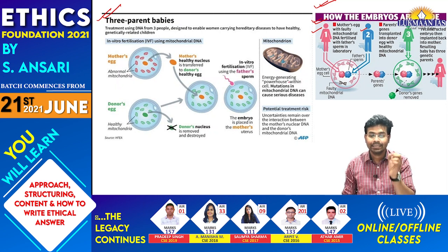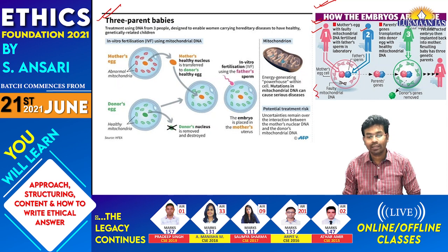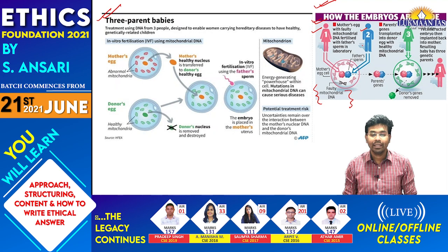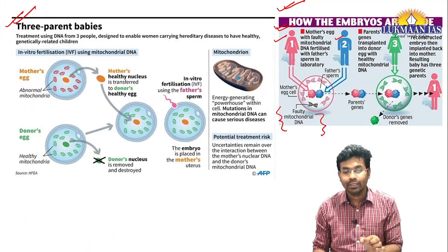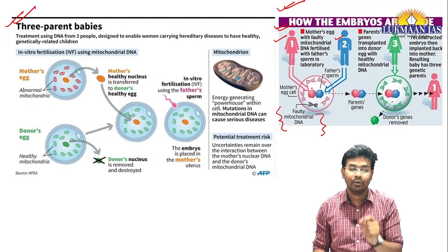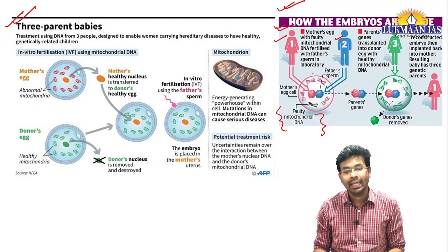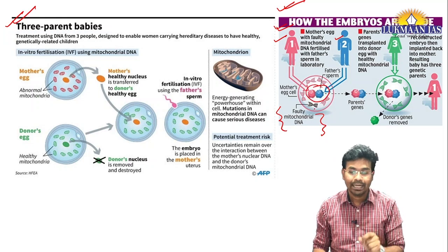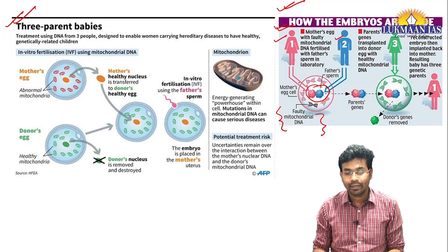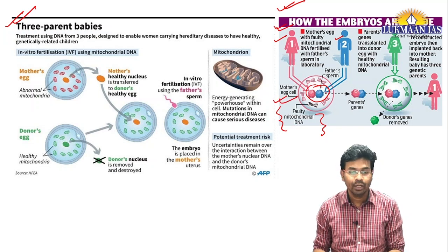The issue is that in the case of the mother's egg, the mitochondria is faulty. So what we do is implant the sperm of the father into the egg of the mother's cell, creating a zygote. However, this egg has faulty mitochondria.